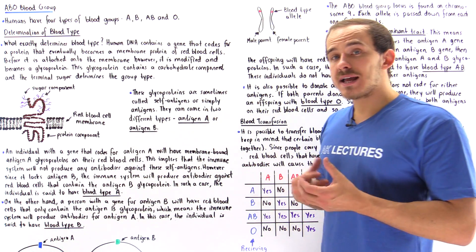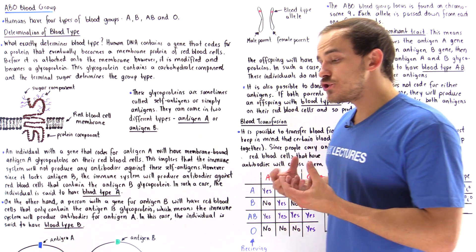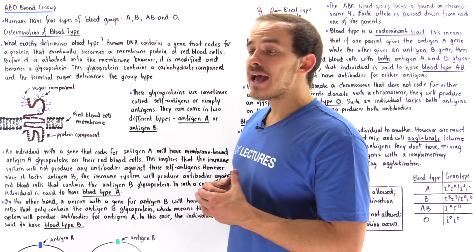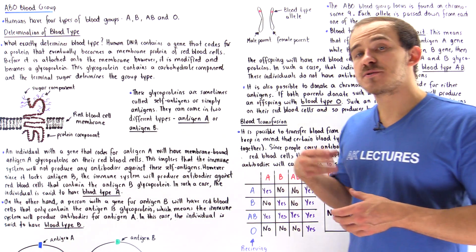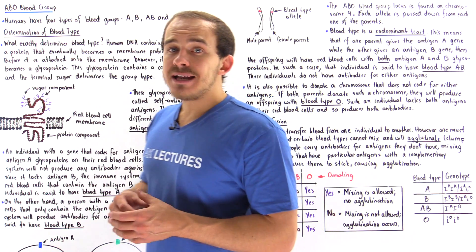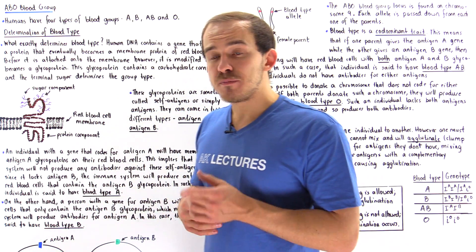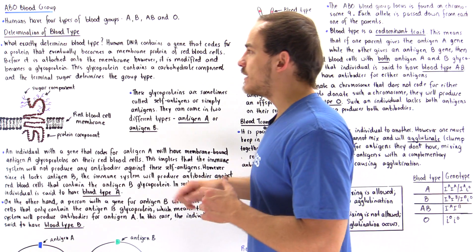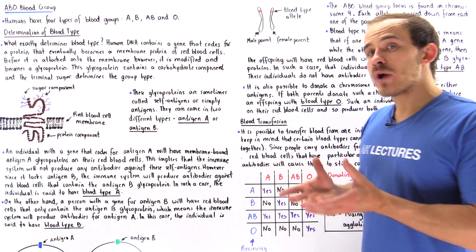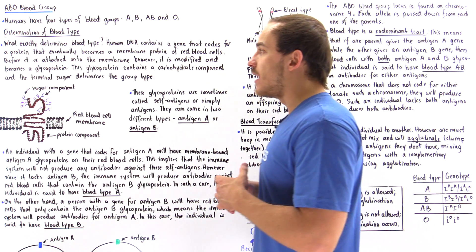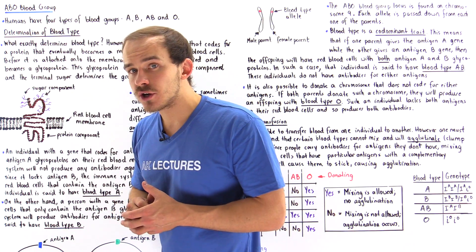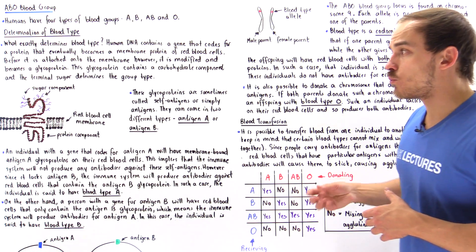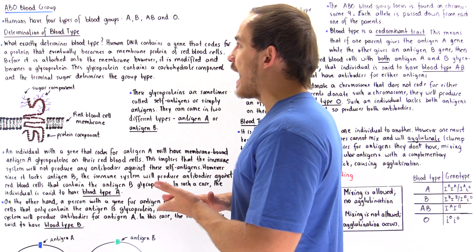Each human, inside our DNA, has a gene that codes for this protein. Before the protein is actually attached onto the membrane of red blood cells, it is modified in the Golgi apparatus, and a carbohydrate attachment is made onto that protein to form a glycoprotein. This glycoprotein is then transferred onto the membrane of red blood cells, and it's the terminal sugar on that glycoprotein that determines the blood type of our individual.